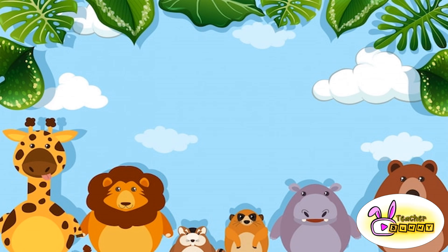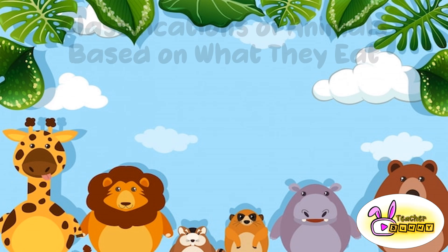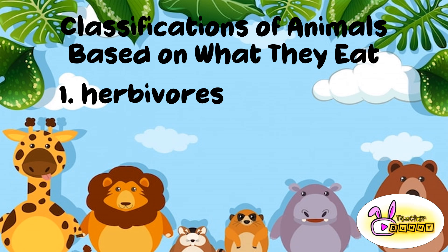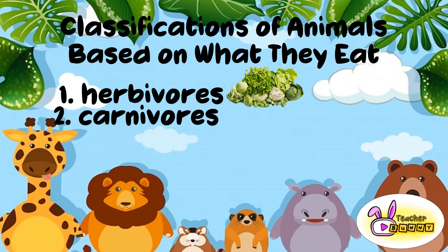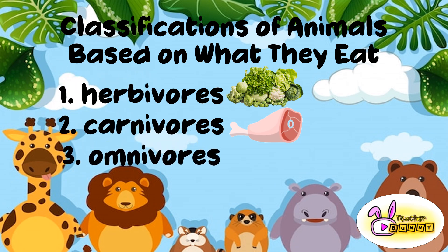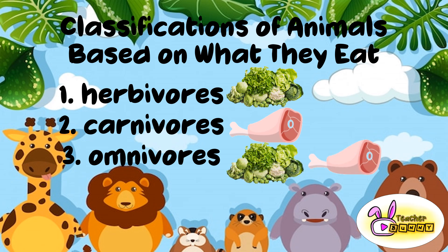And that's it for today's video! Classifications of animals based on what they eat: number one, herbivores — animals that only eat plants; number two, carnivores — animals that only eat meat; and number three, omnivores — animals that eat both plants and meat.